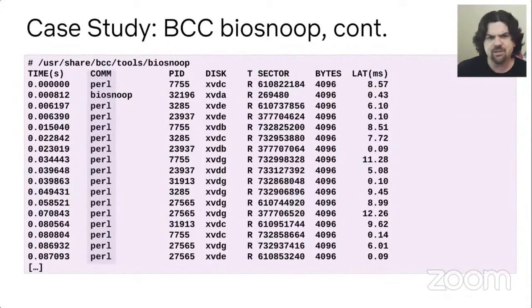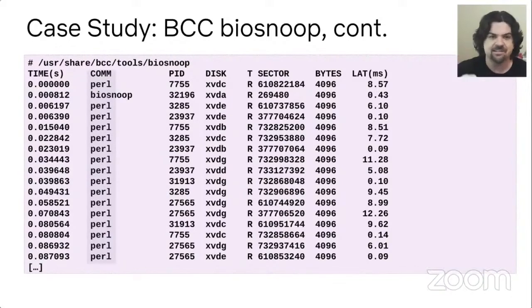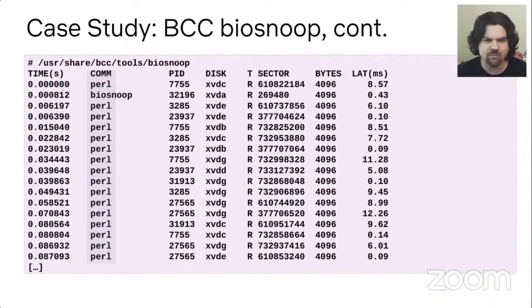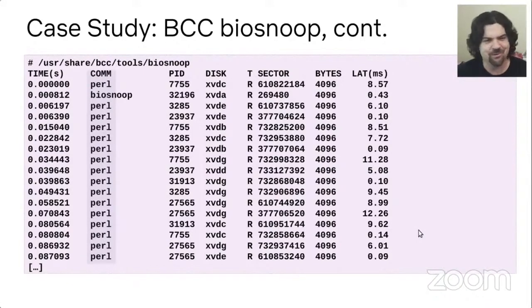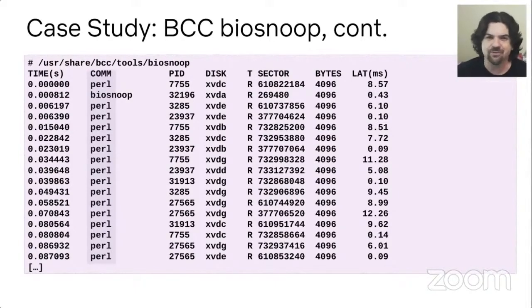Biosnoop gives me lots of columns I can study — I can look at the latency per event for disk IO, the sectors, the disks accessed, and so on. But what caught my eye was Perl. I didn't know Cassandra was written in Perl. Cassandra is not written in Perl — Cassandra is a Java application. But here there was Perl doing a lot of disk reads.